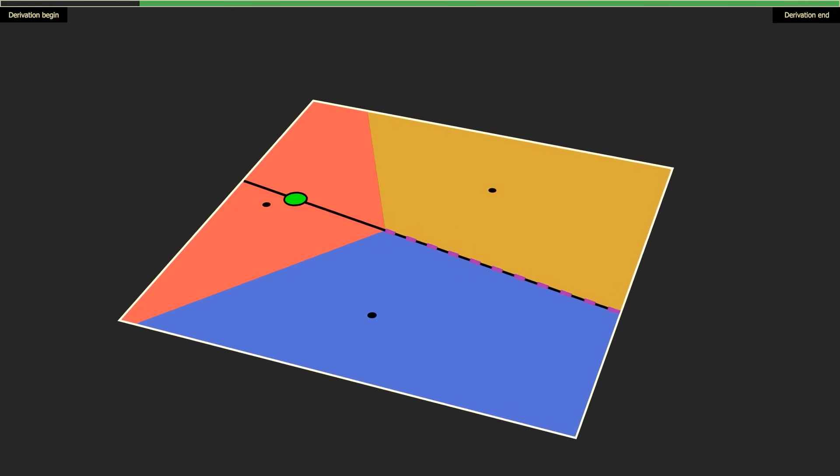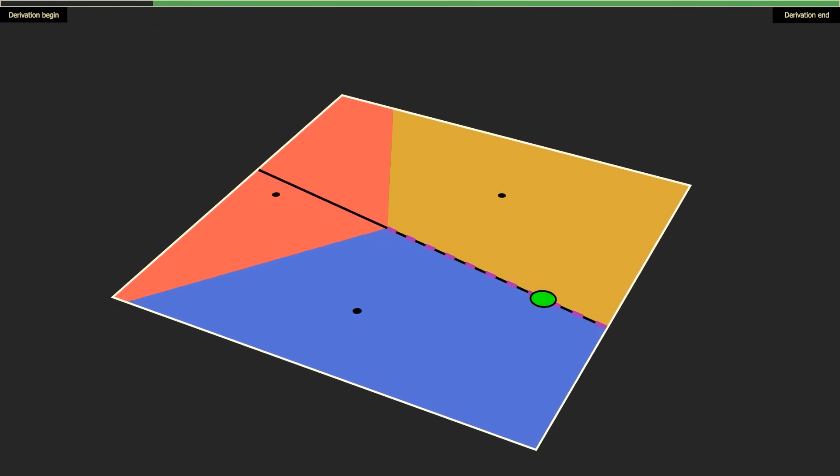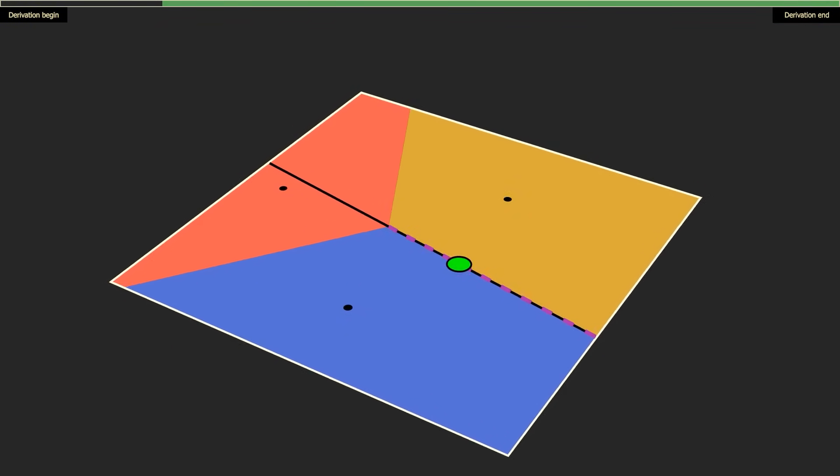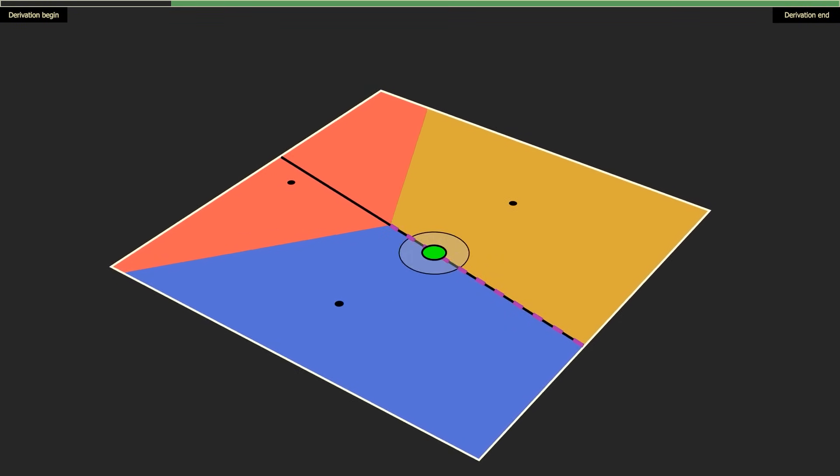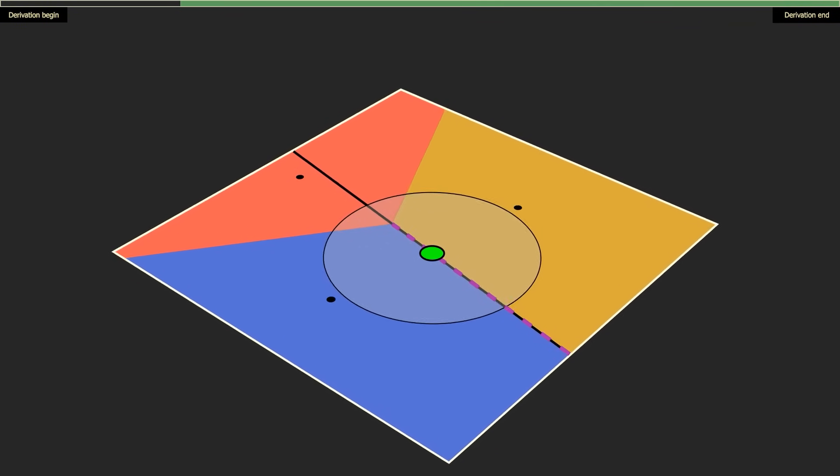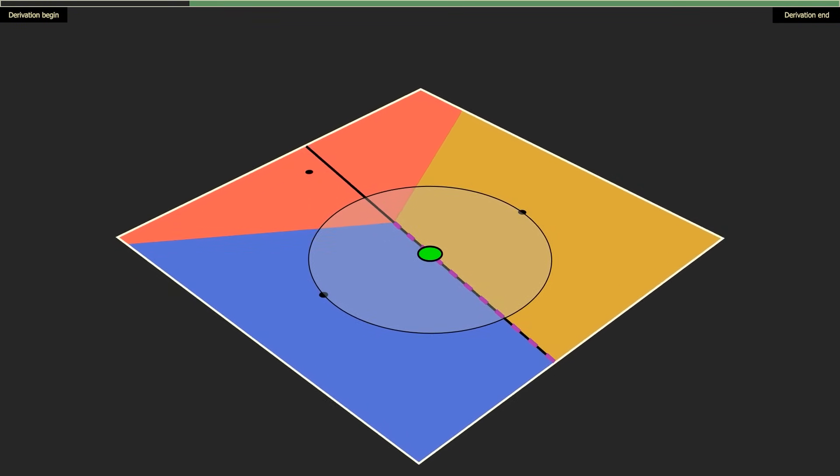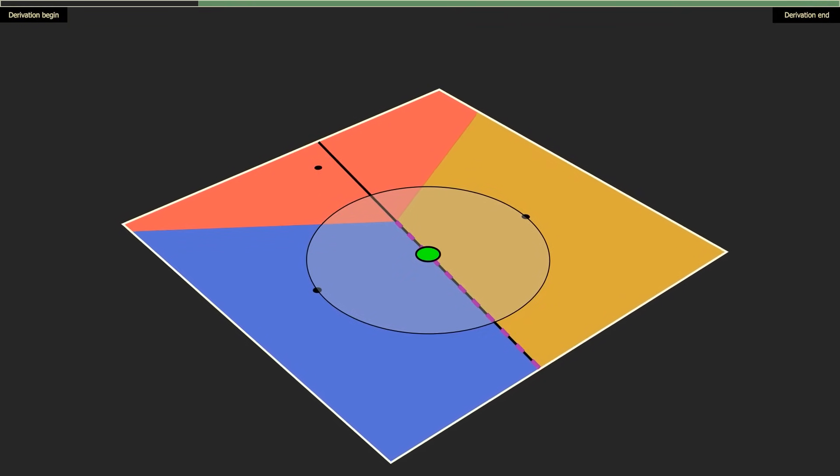But only some of these points are actually included in the border. The red part is colored from a different site. To tell if a point is going to be included, imagine a circle centered at the point just big enough that it touches the two sites. I'll let you pause the video here if you'd like to think about what comes next.